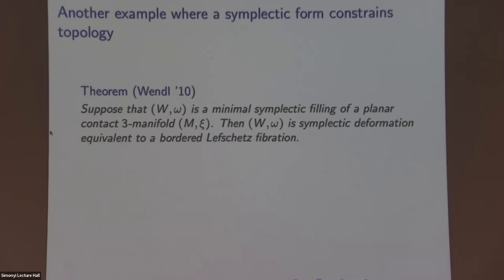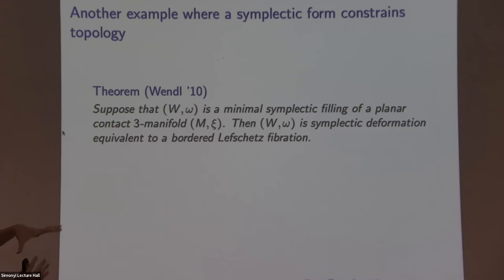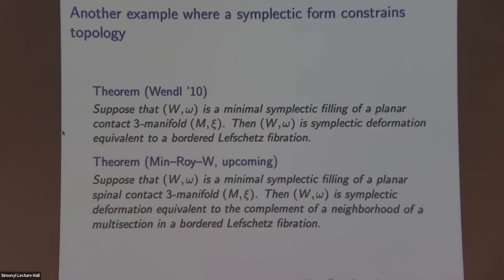So some other examples that when the symplectic form can constrain topology, and this is a slightly different line of thought, but there's a theorem of Chris Wendl who says if you have a strong filling, if you have a symplectic filling, a minimal symplectic filling of a planar contact three-manifold. So planar means your contact three-manifold is supported by a planar open book. So open book is some decomposition of your manifold via certain foliations. So he showed that if your bounding four-manifold, or yeah, four-manifold is a symplectic filling, then it has to come from a Lefschetz fibration. So that's a constraint on the deformation equivalent type, but also in particular the smooth type.